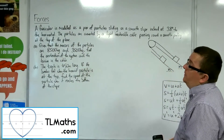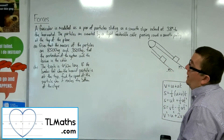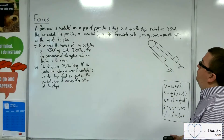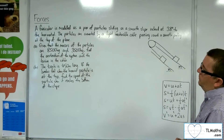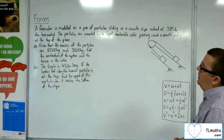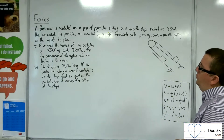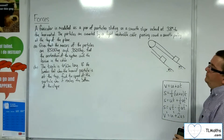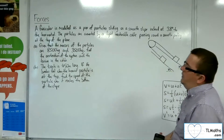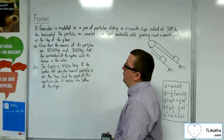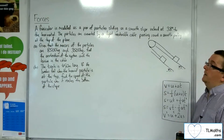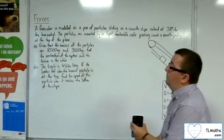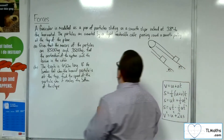In this problem, a funicular is modelled as a pair of particles sliding on a smooth slope inclined at 38 degrees to the horizontal. The particles are connected by a light inextensible cable passing around a smooth pulley at the top of the plane. Given that the masses of the particles are 8,500 kilos and 3,500 kilos, find the acceleration of the system and the tension in the cable.